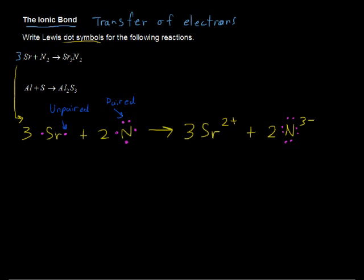Does this all work out, losing 2 and gaining 3? But we have these coefficients. So ultimately, this has lost 6. 3 times 2 has lost 6 electrons. And 2 times 3 is 6. And so the nitrogen has gained, not each nitrogen atom, but for every 2 nitrogen atoms or ions, we have gained 6 electrons.